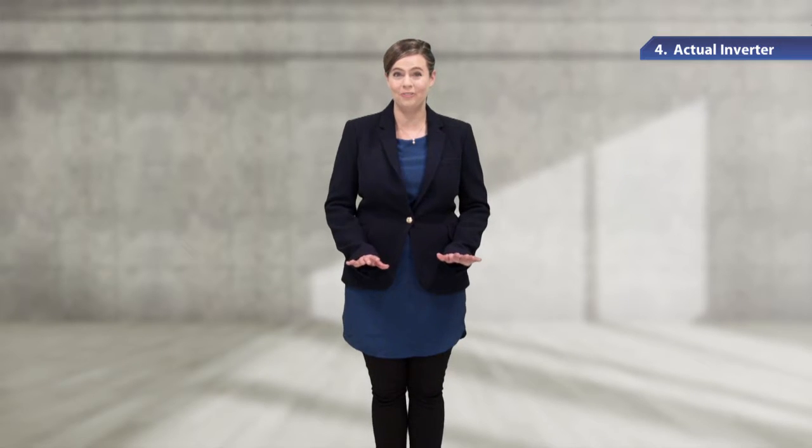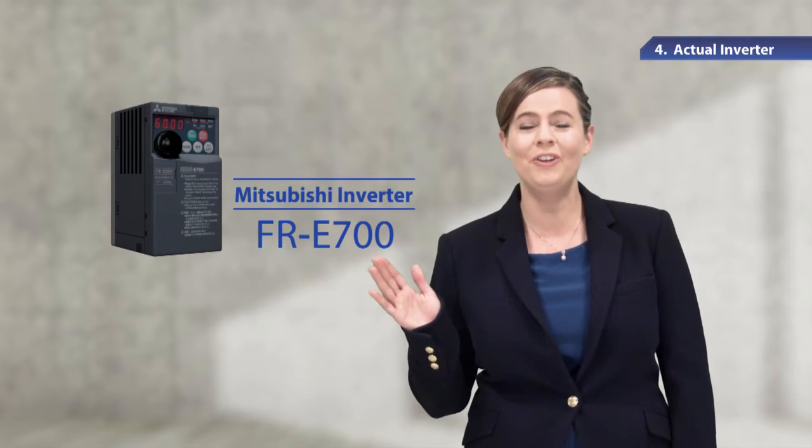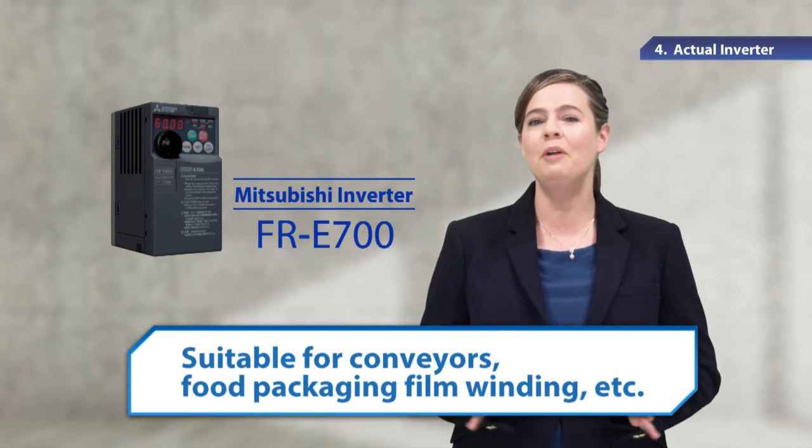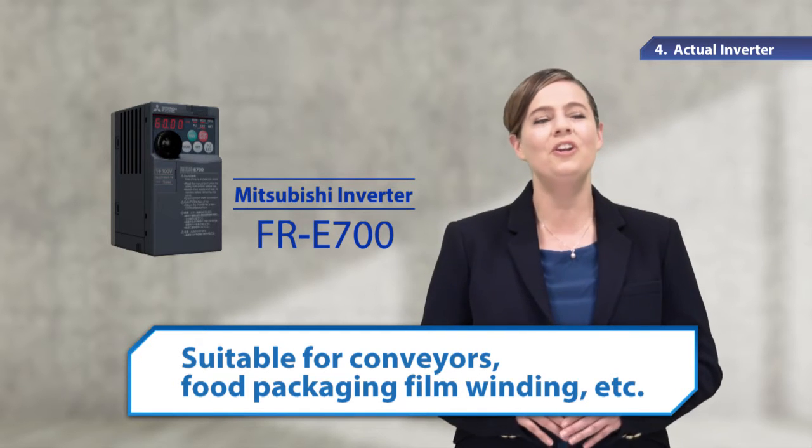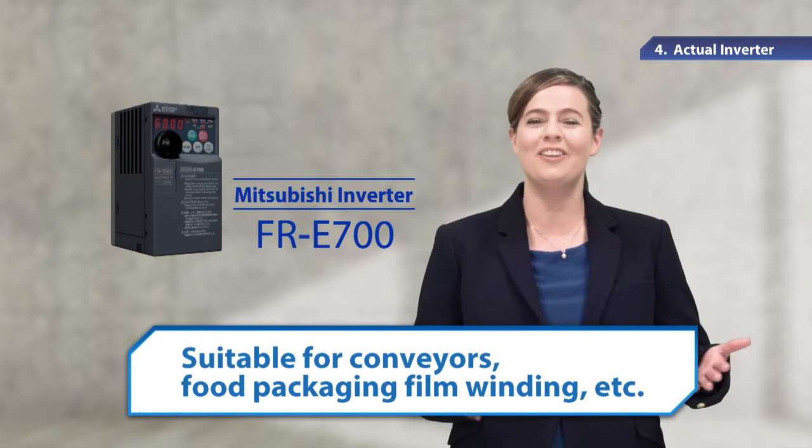In this chapter, we're going to use an actual inverter. This is the Mitsubishi General Purpose Inverter FR-E700 series. This series has a lineup of highly functional, compact inverters that are used for conveyors, film-winding machines for food packaging, and so on.